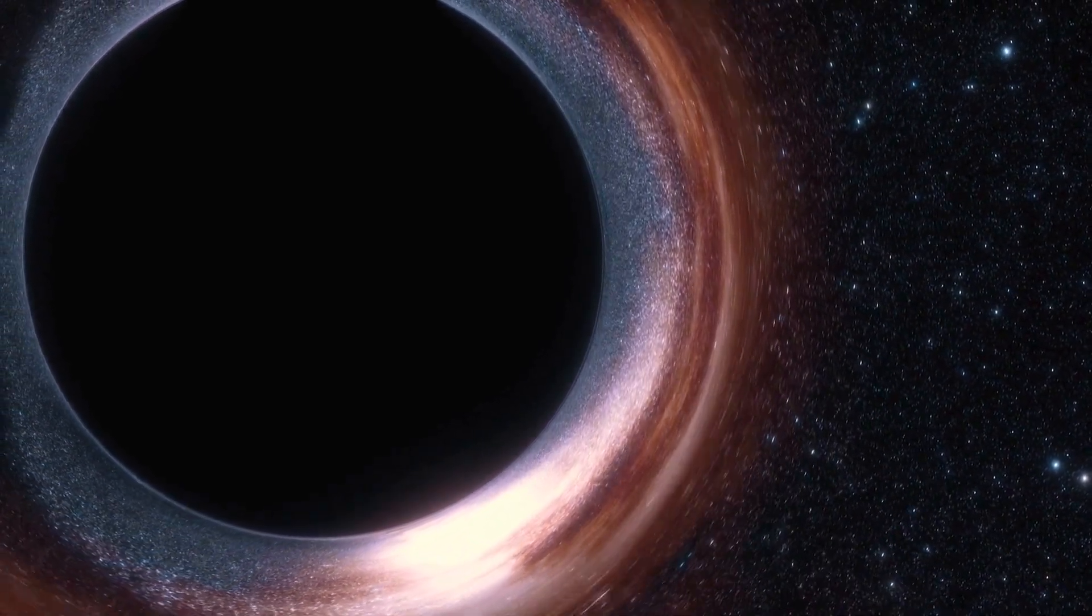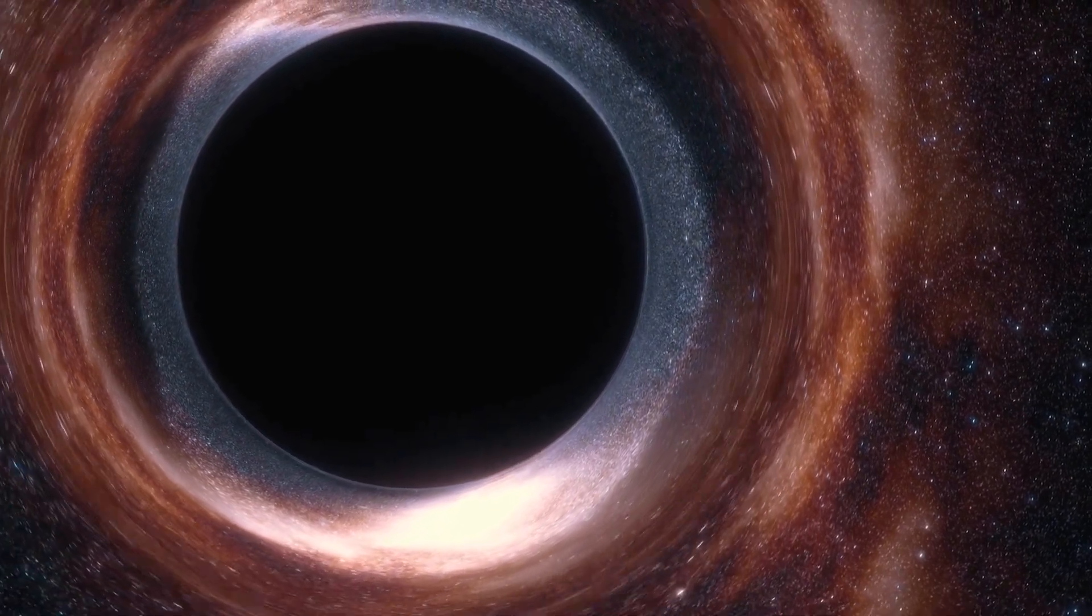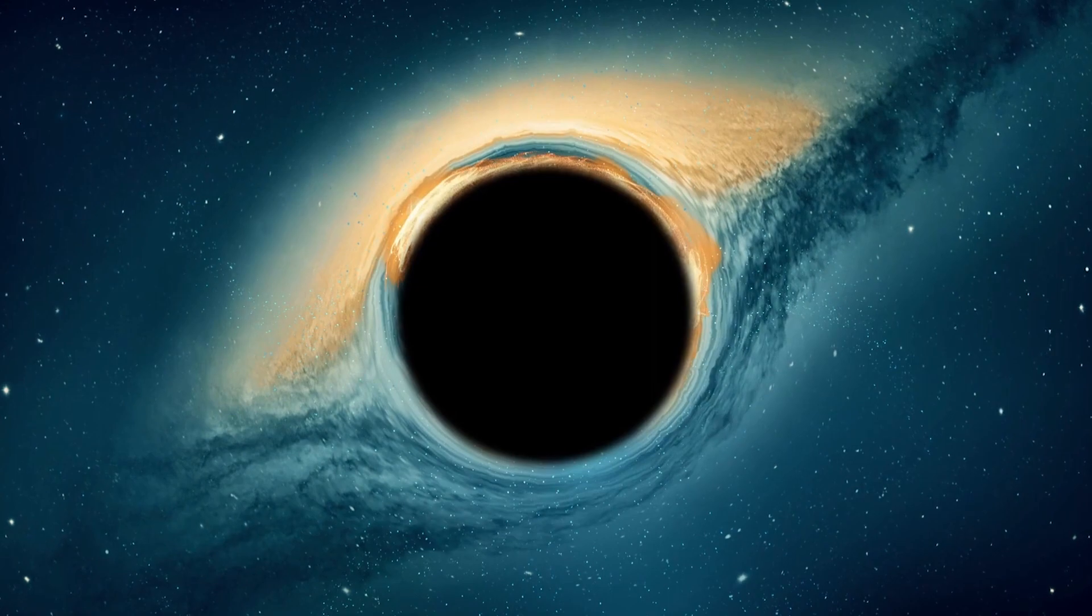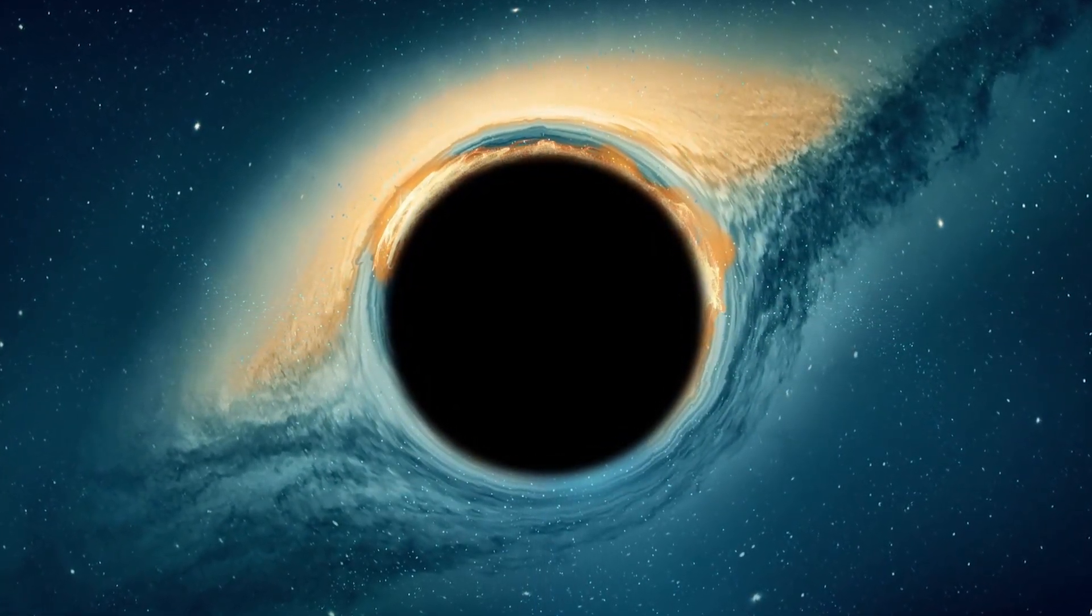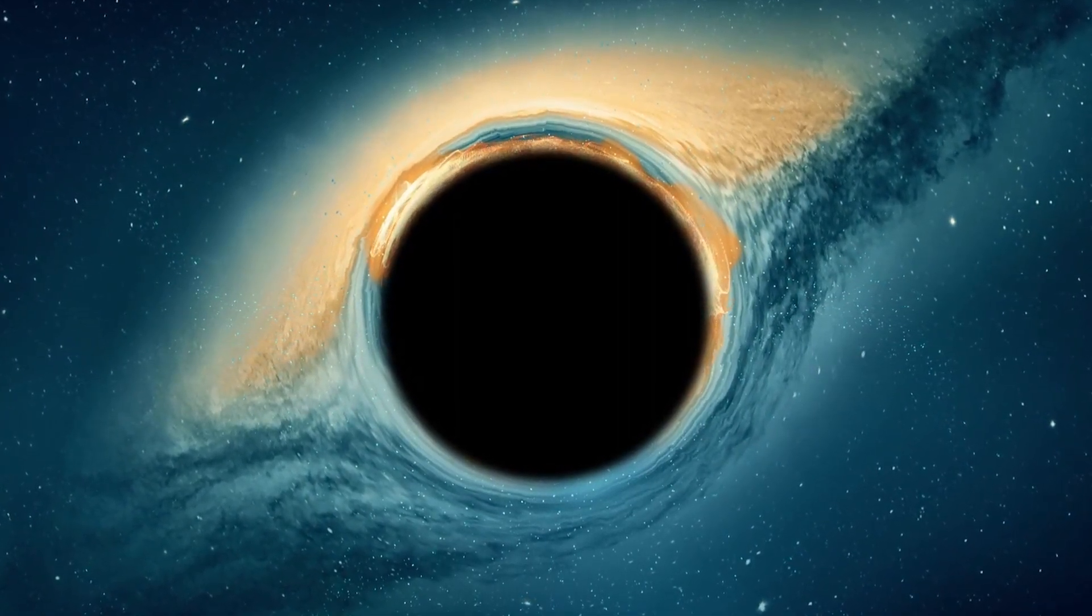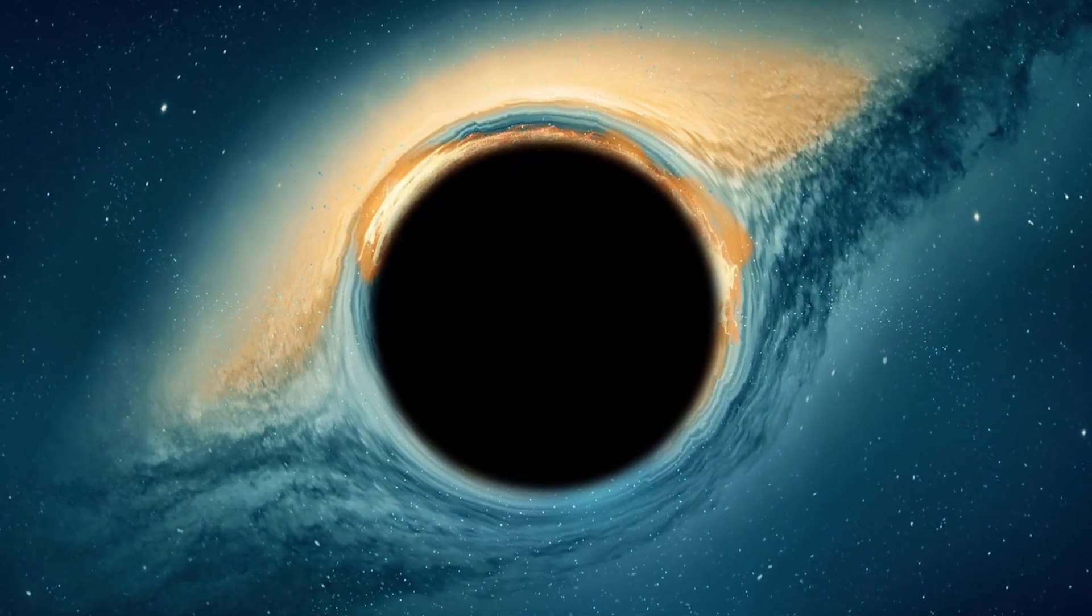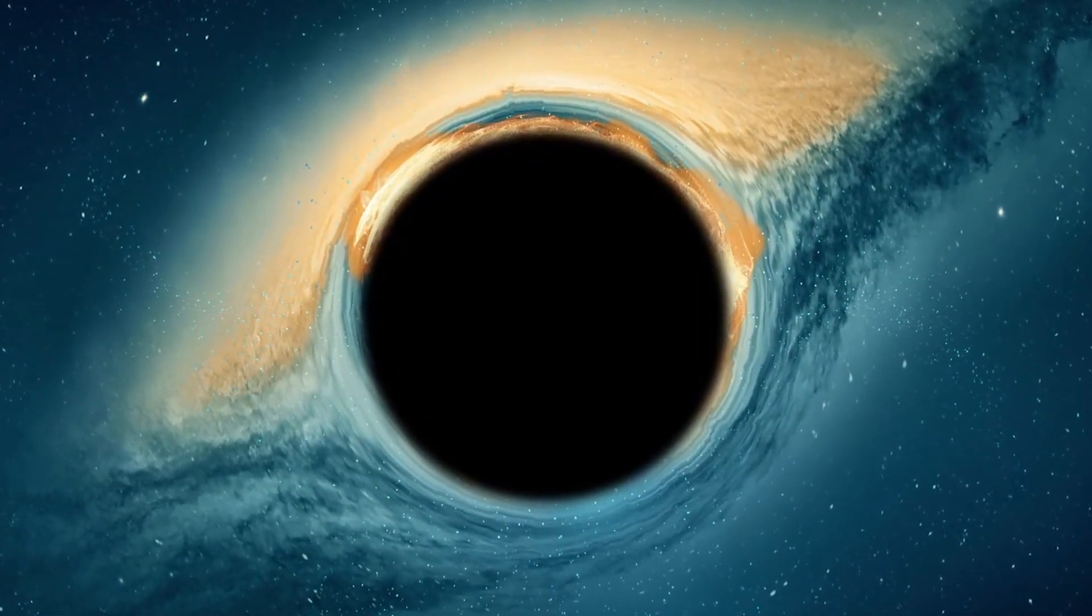As we well know, black holes possess extremely powerful gravitational force that even light cannot escape. However, in the vicinity of a black hole, one often finds a spinning disk of material, such as gas or dust, concentrated by its immense gravity. This material heats up as it spirals towards the black hole, emitting X-rays and other types of radiation, creating a luminous ring known as a corona.